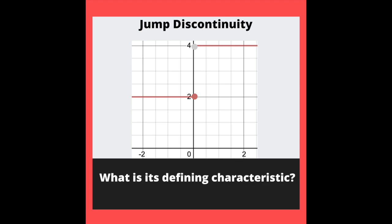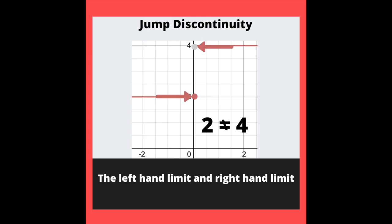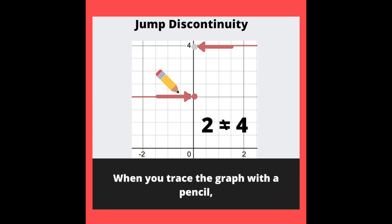What is its defining characteristic? The left hand limit and right hand limit both approach different values. When you trace the graph with a pencil